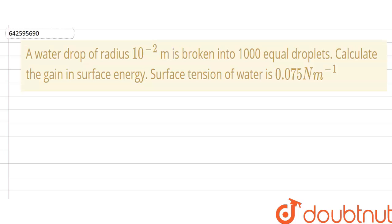In this question, a water drop of radius 10 to the power minus 2 meter is broken into a thousand equal droplets. We have to calculate the gain in surface energy. The surface tension of water is given as 0.075 newton per meter.